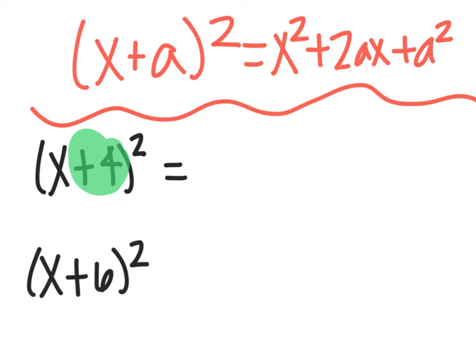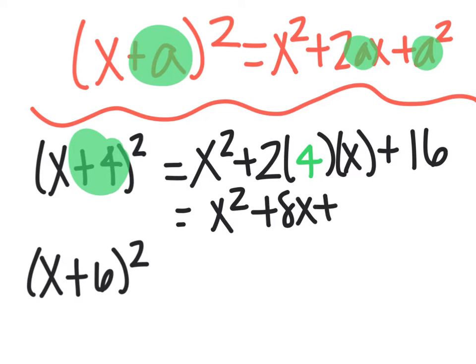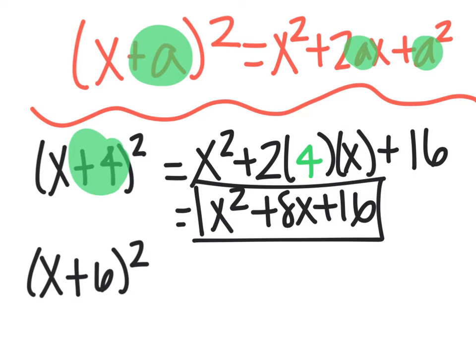Well, a in my first problem is 4, so it goes wherever I had an a in the original problem. That would be x²+2 times 4 times x, plus 4², which is 16. If I simplify that, it's x²+8x+16.